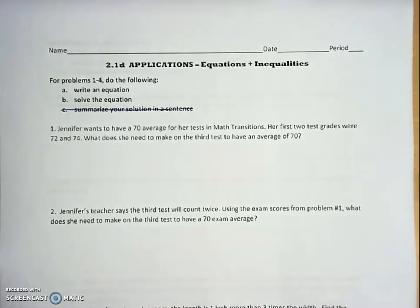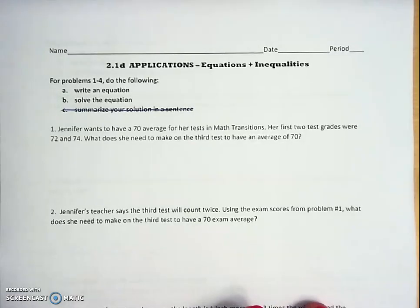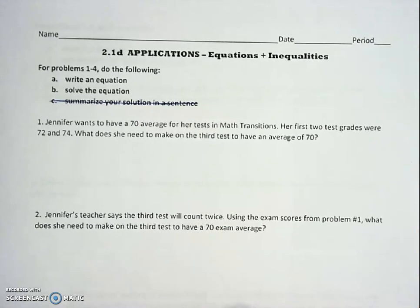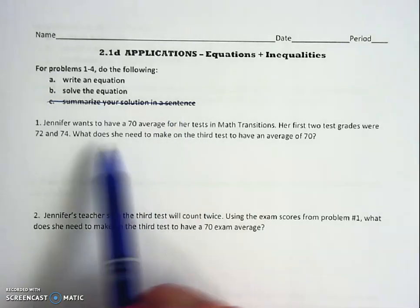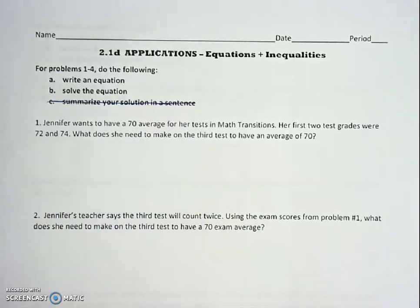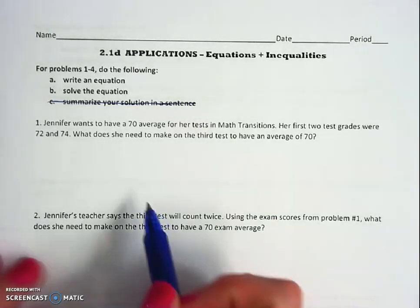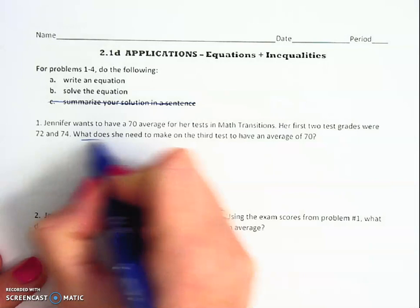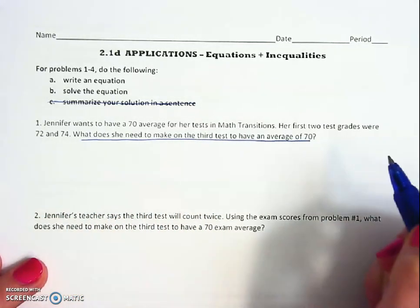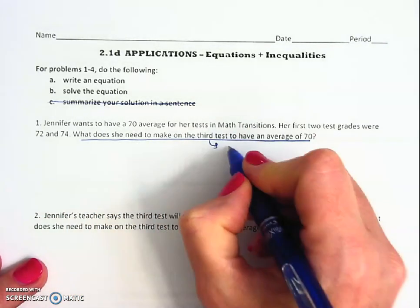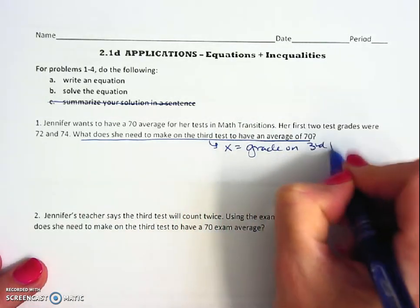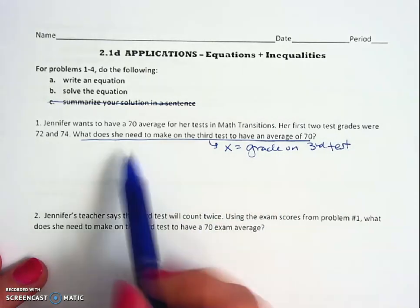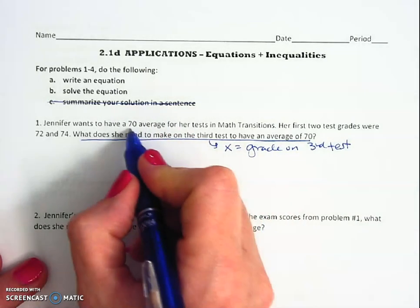The first thing we always want to do is read the problem and identify what it's asking us to find, and then assign a variable to that information. Pause your video just to read it and get a feel for it. What it's asking us to find is what does she need to make on the third test to have an average of 70, so we're gonna let x equal the grade on the third test.